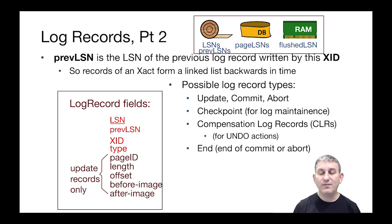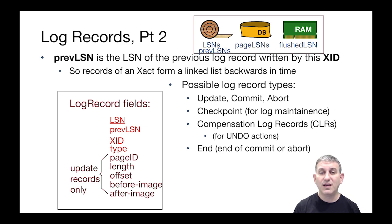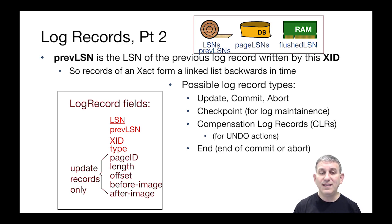Every log record can have one of multiple types. It can be an update log record, a commit record, or an abort record. It could be a checkpoint record, which is for log maintenance. Or it could be a special kind of log record called a compensation log record — a CLR — which is going to be used to log undo, as we'll see. And finally, we'll have a sort of advisory log record called an end, which is going to end the commit or abort processing. What we're seeing on the left here is an example of an update log record.